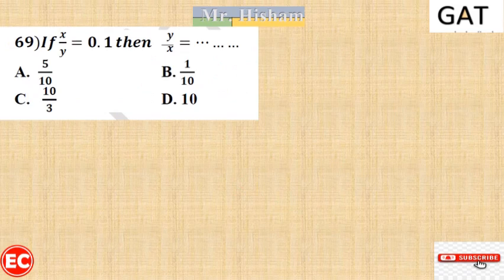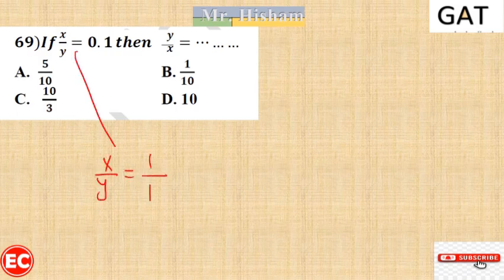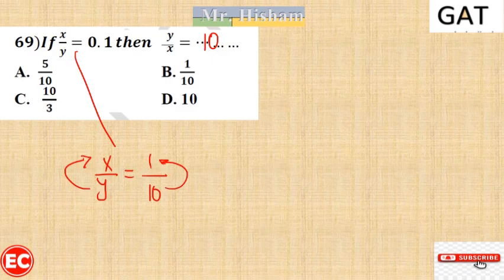Question 69: If x/y equals 0.1, find y/x. Write 0.1 as 1/10. Flipping both sides: y/x equals 10/1 equals 10. The right answer is D.